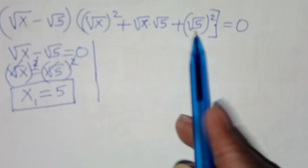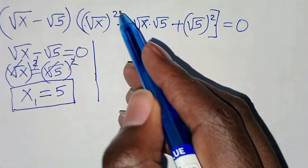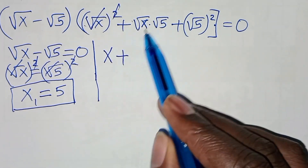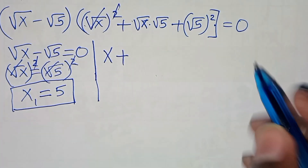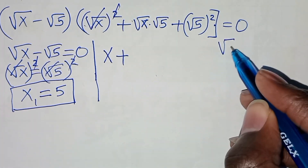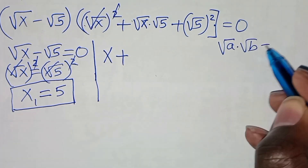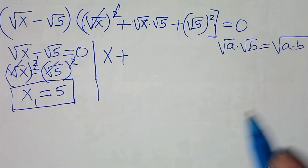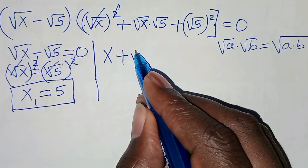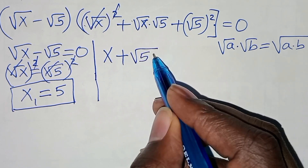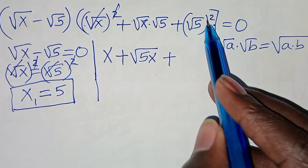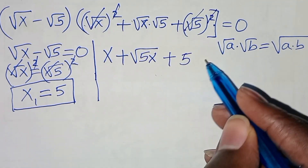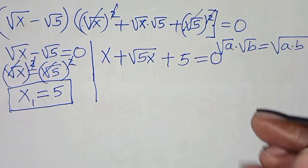Proceeding to the second factor: √x squared is x, and √x times √5 is in the form √a · √b, which equals √(ab), giving √(5x). And √5 squared eliminates the square root to give 5. So the second factor becomes x plus √(5x) plus 5 equals 0.